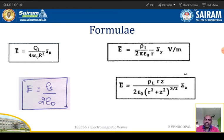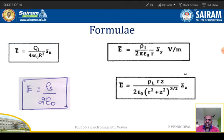Here the magnitude is given. If you want to write electric field intensity in vector form, we can write vector E equal to the magnitude of the electric field intensity times the unit vector a_r. The magnitude of the electric field intensity due to surface charge distribution is E equal to rho-S divided by 2 epsilon-0, where rho-S is the surface charge density.